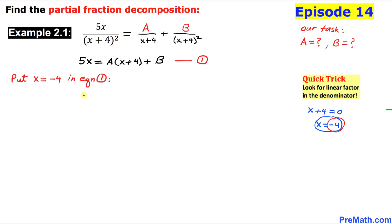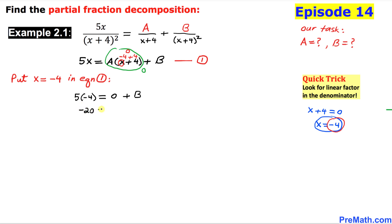We put x equal to negative four into equation 1. On the left-hand side: 5 times negative four. On the right-hand side, negative four plus four gives zero, so the entire A term becomes zero. We are left with negative 20 equals B, so B equals negative 20.